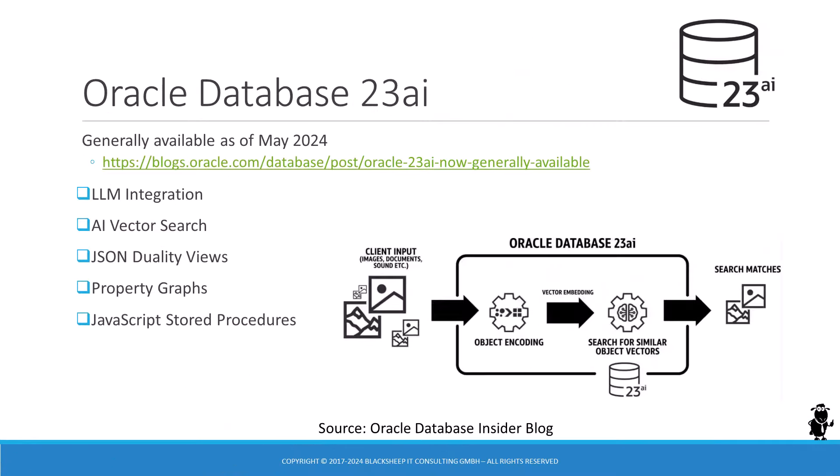In other news, Oracle has released the next long-term support release of their flagship database, dubbed 23AI. This is important news for Siebel customers running on Oracle Database. Siebel CRM can be run on three relational database management systems: IBM DB2, Microsoft SQL Server, and Oracle. We can safely assume that the majority of Siebel CRM deployments run on Oracle databases. The general availability of Oracle Database 23AI is important because it's the next long-term support release after Oracle Database 19C, and it's highly likely that Oracle will certify Oracle Database 23AI with Siebel CRM in the near to mid-term future.